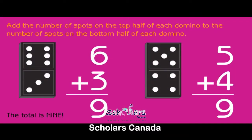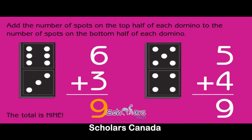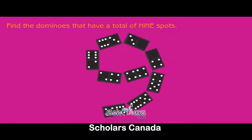Add the number of spots on the top half of each domino to the number of spots on the bottom half. The total is nine. Six plus three equals nine. Five plus four equals nine. Find the dominoes that have a total of nine spots.